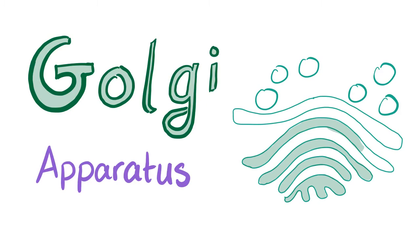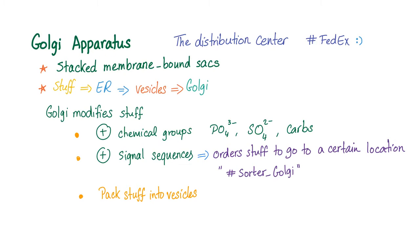Let's talk about the Golgi apparatus — the sorter, the distribution center. It consists of stacked membrane-bound sacks. Stuff goes to the ER, then to vesicles, then to the Golgi apparatus. The Golgi also modifies stuff by adding chemical groups such as phosphate, sulfate, and carbohydrate.